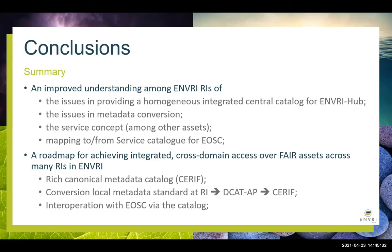We're using a rich canonical metadata catalogue, with conversion from local metadata through to it using DCAT-AP, and inter-operation with EOSC via the catalogue. However, this is a big vision requiring an awful lot of work. It takes a lot of time to get the RIs properly aligned and all the conversions done, because the RIs themselves are also evolving. And on the other side of the Envry Hub, EOSC is continuously evolving — so it's a very dynamic situation.